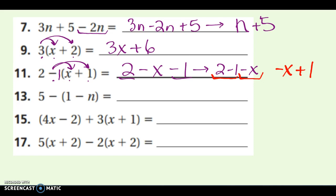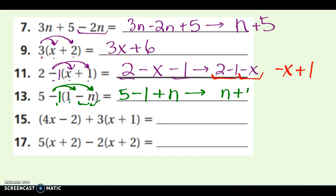On the next one, I again have a negative to distribute before doing anything else. Copy down the 5, but then negative 1 times 1 is minus 1, and negative 1 times negative n turns into positive n — a negative times a negative gives me positive n. The constants are already together, so I combine like terms. The variable goes in front, and 5 minus 1 is positive 4, giving me n plus 4.